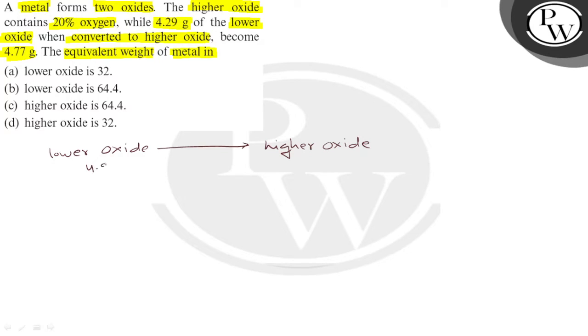Lower oxide's mass is 4.29 gram. When converted to higher oxide, this mass is 4.77 gram. The extra mass is oxygen. The extra mass of oxygen is plus 0.48 gram.